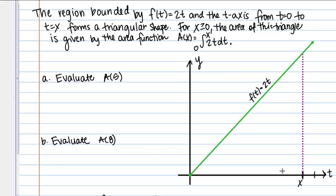Then we're given an area function. Remember that the definite integral gives the net area under a curve or some function. This is saying for x ≥ 0, remember x is this value on the t-axis. For x ≥ 0, the area of this triangle is given by this area function, 0 to x of 2t dt. That's what we're working with here.